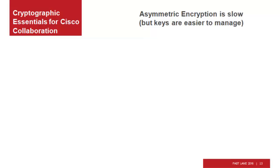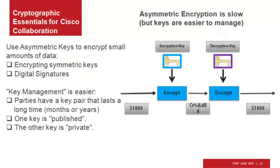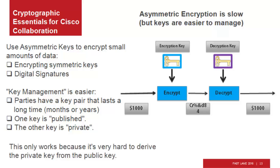Asymmetric encryption is slow, but keys are easier to manage. We can use asymmetric keys to encrypt small amounts of data — for example, encrypting symmetric keys to exchange them. Digital signatures provide authentication and non-repudiation services. Key management is easier because parties have a key pair that lasts months or years, and we have to exchange keys far less often. One key is published — public keys are available for everyone to see. The other key is private, kept in a secret local store and never exchanged. If you encrypt with the public key, you decrypt with the private key, and vice versa. Asymmetric encryption only works because it's very hard to derive the private key from the public key.